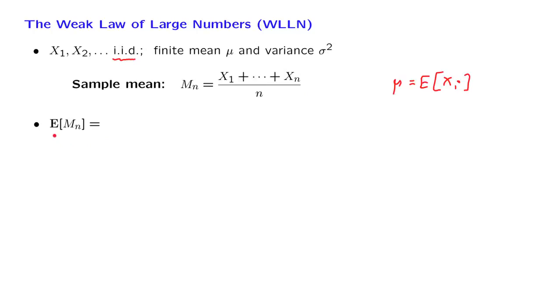Whereas the expectation averages over all possible outcomes of this experiment. The expectation is some kind of theoretical average, because we do not get to observe all the possible outcomes of this experiment. But the sample mean is something that we actually calculate on the basis of our observations.